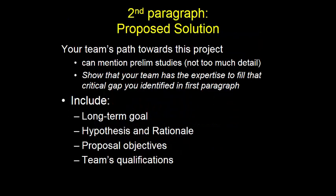Second paragraph — without too much detail, because you have the whole approach section for the nitty-gritty, you're going to talk about how your team has been on a natural trajectory to getting here. Maybe that was in your K award or from other work, and your team has the expertise to fill the gap you identified in the first paragraph. Here you can talk about the longer-term goal, your hypothesis and rationale, your objectives, and your team's qualifications — some combination. It's an art, it's not strict, it's going to be tailored a little bit to yours. Then this second paragraph segues right into the aims.